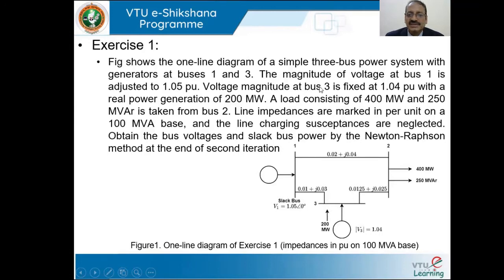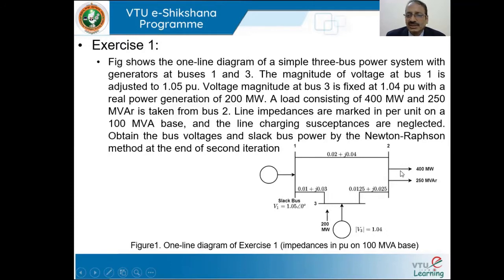Bus 1 is the slack bus where a generator is connected and its voltage is adjusted to V1 = 1.05 at angle 0. Voltage magnitude at bus 3 is fixed at 1.04 per unit — the generator excitation is adjusted such that bus 3 voltage can be maintained at 1.04 per unit. The real power generation of the generator connected to bus 3 is 200 megawatt.